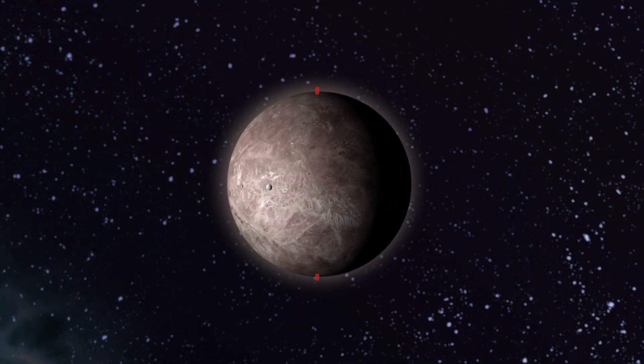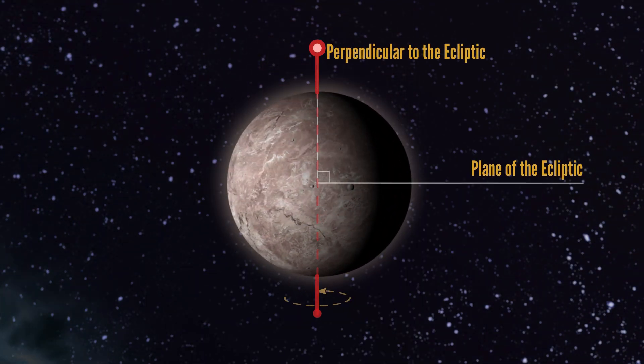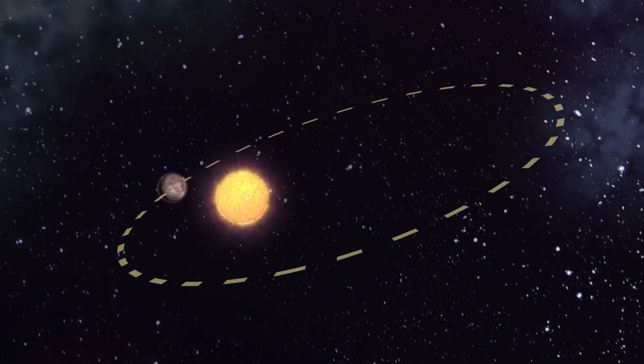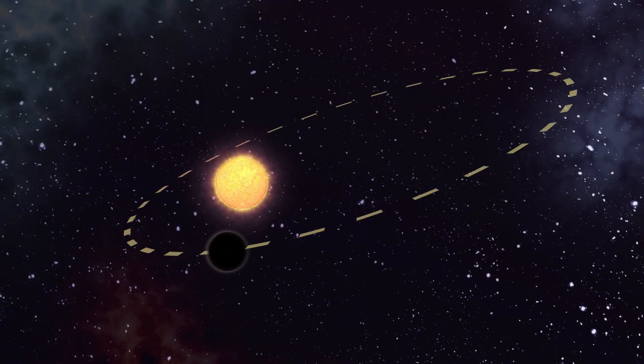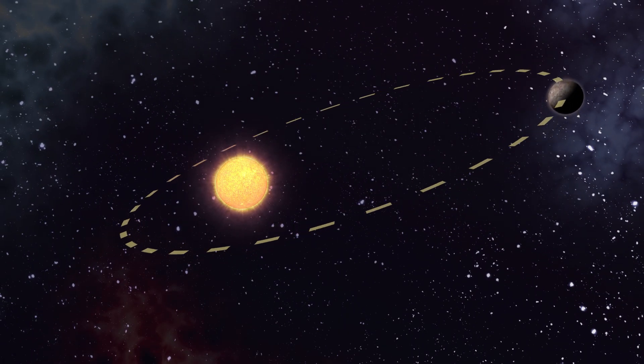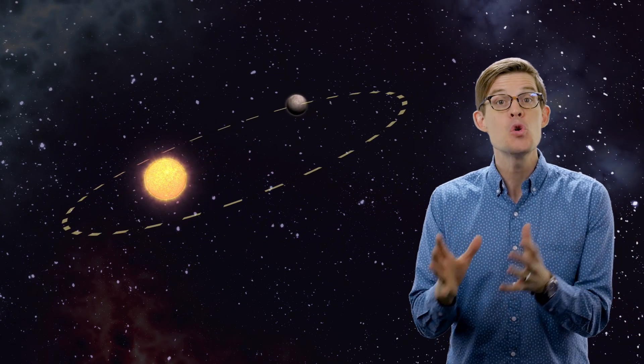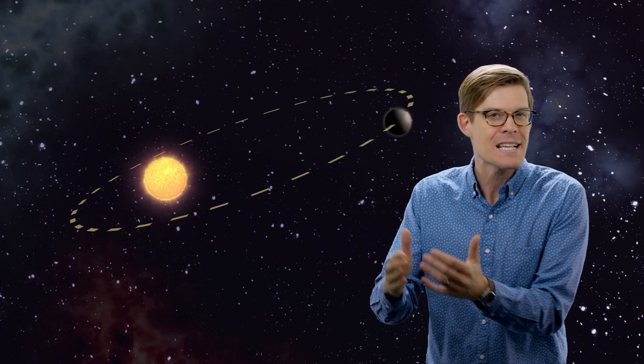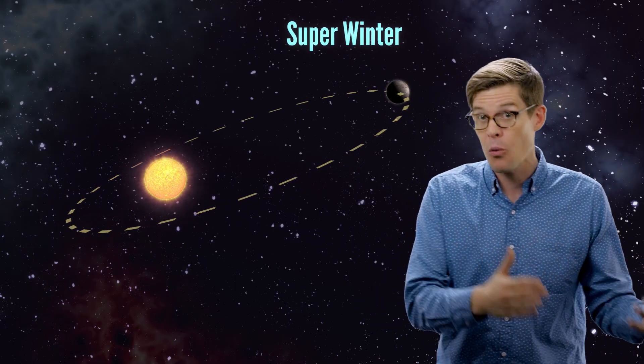Way out on the dwarf planet Pluto, seasons hit their most extreme. Pluto has a hugely elliptical orbit, so its summer and winter are determined by its distance to the sun, not just its tilt. Scientists call these super seasons. When tilt summer lines up with a close approach, Pluto has a super summer. And if tilt winter comes at maximum distance, that's super winter.